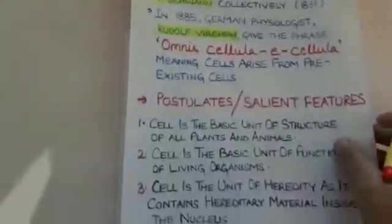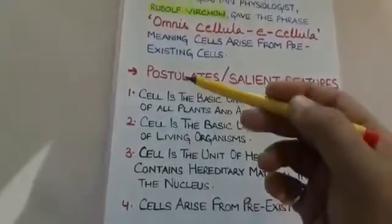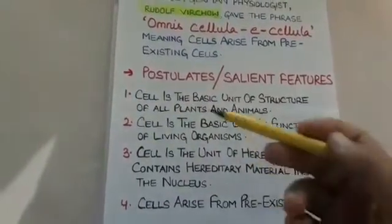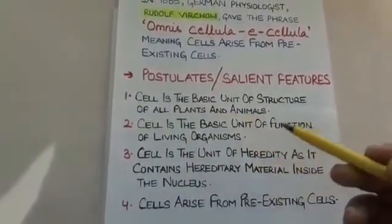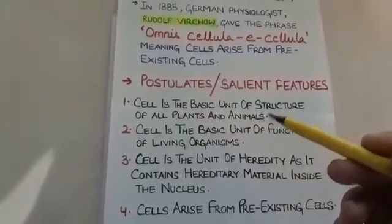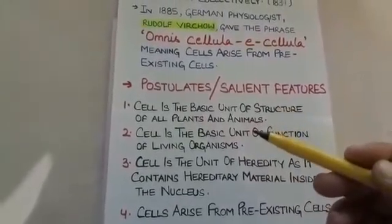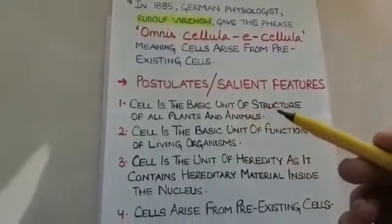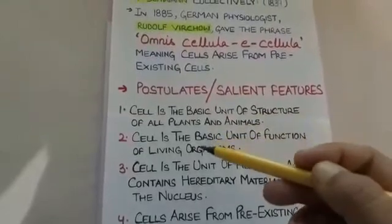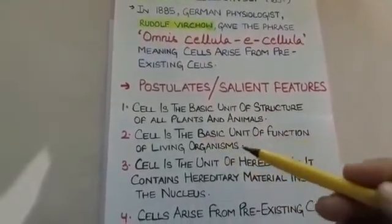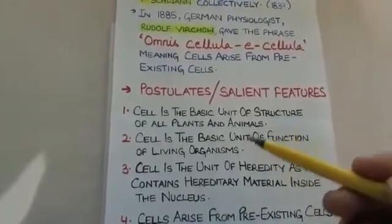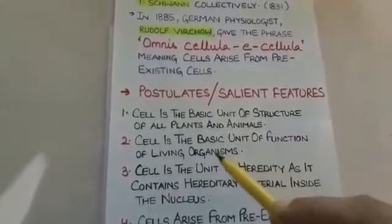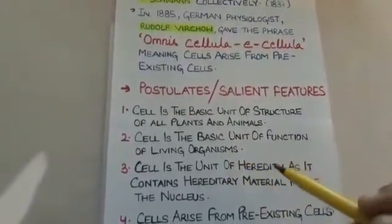The postulates or salient features of cell theory are four in number. The first postulate is: cell is the basic unit of structure of all plants and animals. As we have been discussing, all living organisms are made up of cells, which is why it is the basic unit of structure. The second postulate is: cell is the basic unit of function of living organisms. Since all life processes are carried out within a single cell, it is the basic unit of function of living organisms.